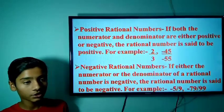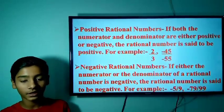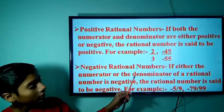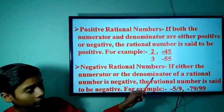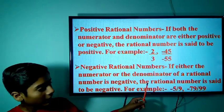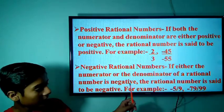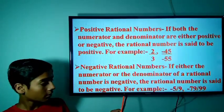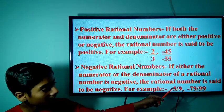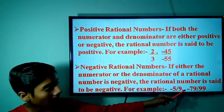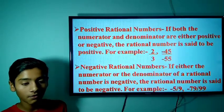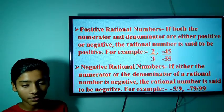The next topic is Negative Rational Numbers. If either the numerator or the denominator of a rational number is negative, the rational number is negative. For example, -5/9 and -79/99 are examples of negative rational numbers.